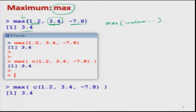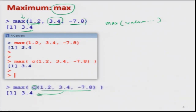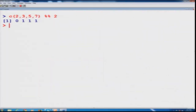Another approach is to combine the same values 1.2, 3.4, and -7.8 using the combine operator and then find the maximum value, which gives the same answer. To illustrate, I paste this command in R, press enter, and get the value 3.4.